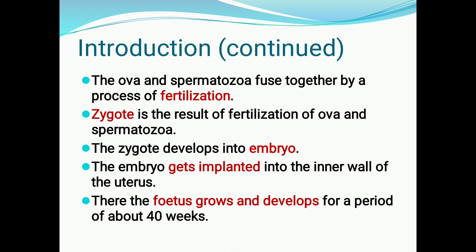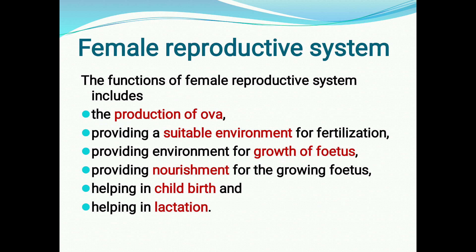The zygote develops into an embryo. This embryo gets implanted into the inner wall of the uterus, specifically into the inner layer called the endometrium. There it grows and develops for a period of 40 weeks, approximately 10 months, as a fetus.